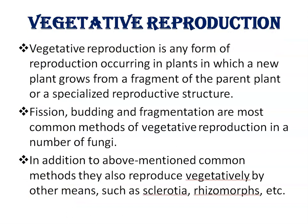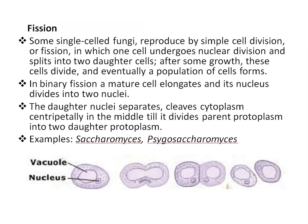Vegetative reproduction is a type of reproduction in which a new plant grows from a part or a fragment of the parent plant or a specialized reproductive structure. Fission, budding, and fragmentation are the most common methods of vegetative reproduction in fungi. In addition, fungi also reproduce vegetatively by means of sclerotia and rhizomorphs.